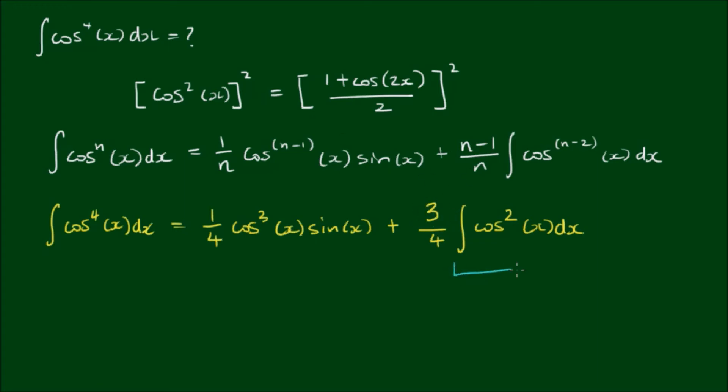Alright, so now the only integral left to evaluate is cosine squared of x. And we can do that either by applying the reduction formula again, or by using the half angle formula. It's my opinion with powers of 2, the half angle formula is more efficient, and the smarter approach. So let's write the formula this way, cosine of twice the angle plus 1 on 2. So just reversing what I've written up here.